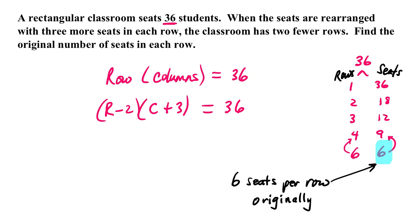Let's look at multiples that have 36 as their product. I'm going to let this side be rows, this side be seats. 36 can be written as 1 times 36, 2 times 18, 3 times 12, 4 times 9, and finally 6 by 6.